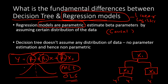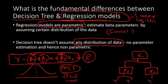In regression we assume some kind of theoretical probability distribution for the error terms. We don't do that in decision tree. Decision trees don't assume any theoretical probability distribution, and no parameter estimation happens — we do not find any beta parameters. Hence we call decision trees non-parametric.